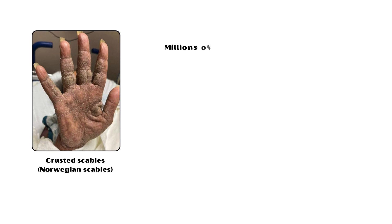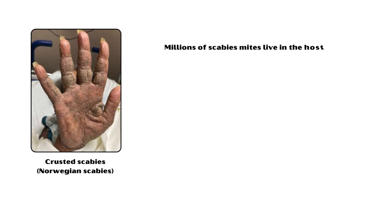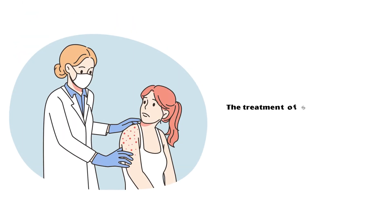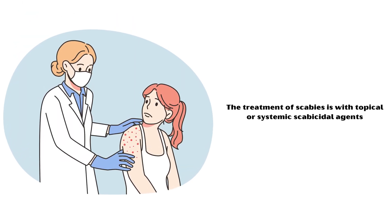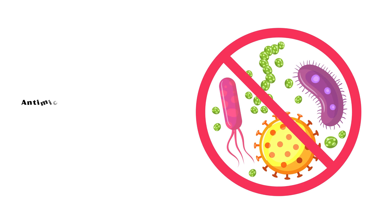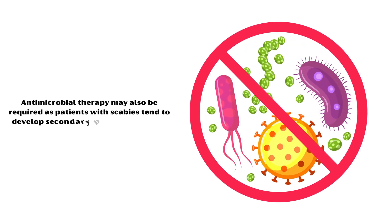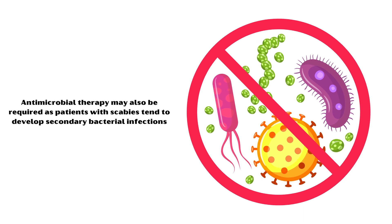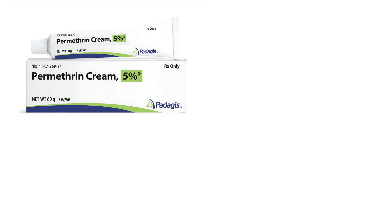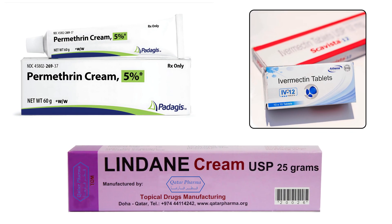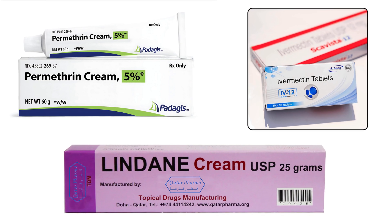In the other type, crusted scabies, also known as Norwegian scabies, millions of scabies mites live in the host. It is highly contagious and associated with significant morbidity. The treatment of scabies is with topical or systemic scabicidal agents. Commonly used agents include permethrin cream, oral ivermectin, or lindane cream. These agents are very effective in the treatment of scabies.